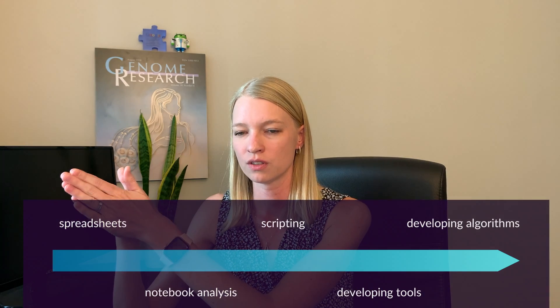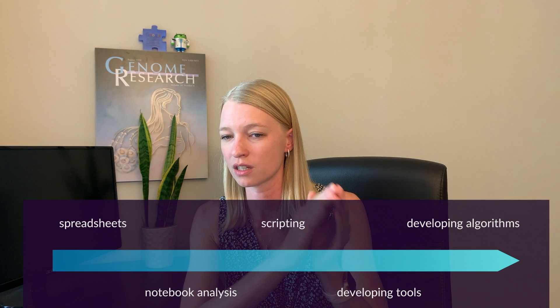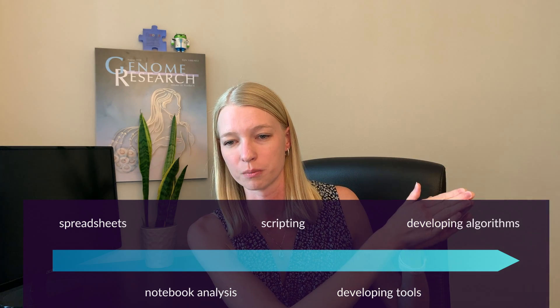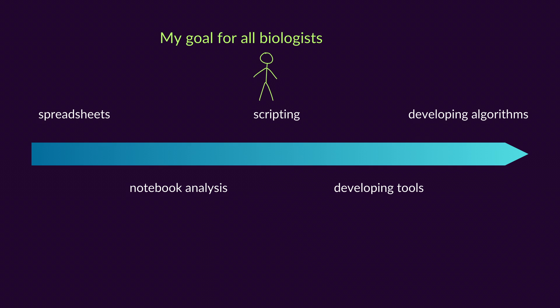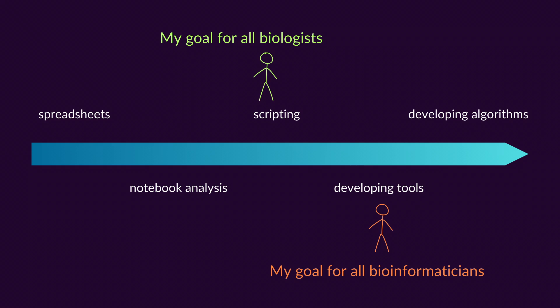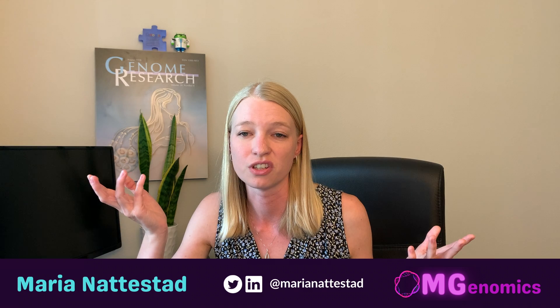I focus on technical skills because they're at the core and you can use them regardless of which direction you go within biology. There's a spectrum of computer science skills — from spreadsheets to analysis in notebooks, to scripting, to developing tools, and finally to developing algorithms. One of my goals with this channel is to get every wet lab biologist up to the notebook analysis level and possibly scripting, and to get dry lab people all the way up to developing tools so they can help other bioinformaticians. Remember to comment below, tell me where you are in the skill-building journey, and what you'd like to see more of. Home Genomics signing off.